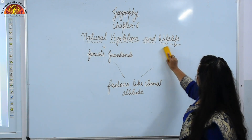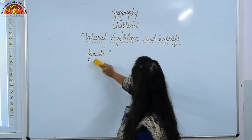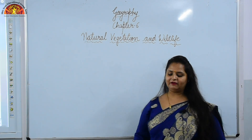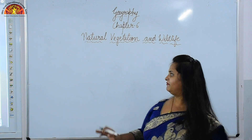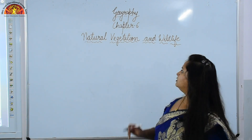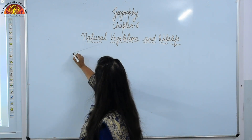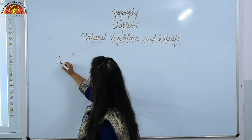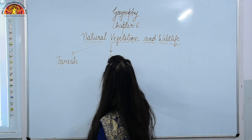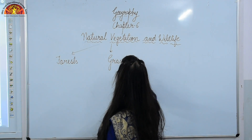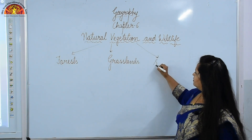Starting from the forest, as you can see in your books, I hope you all have opened up your books. Take pencils in your hands, and if you want, you can take out your rough copies, and whatever I am explaining on the board, you can note it down. Natural vegetation has been classified into 3 parts: forests, grasslands, and shrubs.